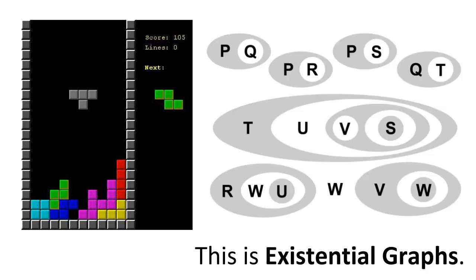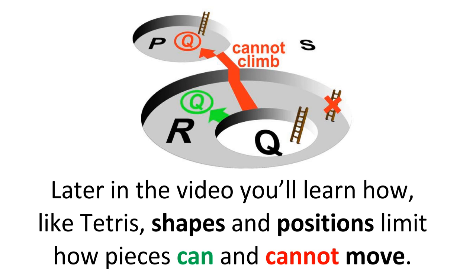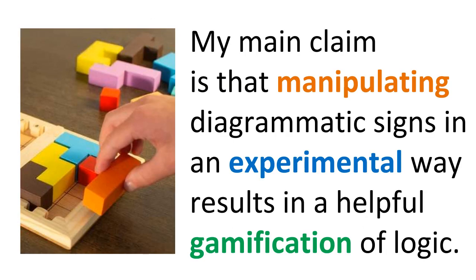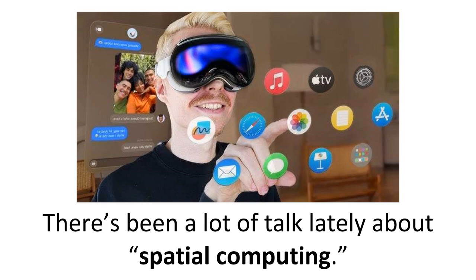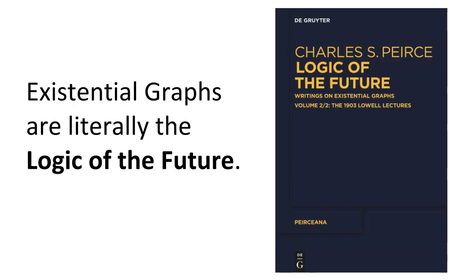This is Tetris. This is existential graphs. Later in the video you'll learn how, like Tetris, shapes and positions limit how pieces can and cannot move. My main claim is that manipulating diagrammatic signs in an experimental way results in a helpful gamification of logic. There's been a lot of talk lately about spatial computing. Existential graphs are literally the logic of the future.